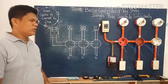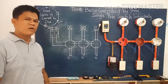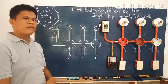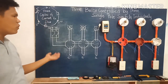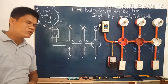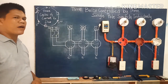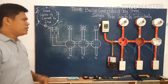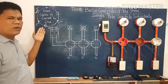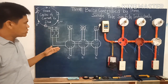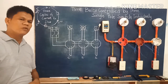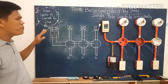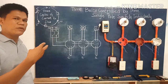Hello guys, welcome back to our channel here at Maestro Electrical. For today's topic we have three bulbs controlled by three single-pole switches individually. Before we proceed on the actual wiring connections, we need to first have a better understanding about the three cycles of current flow in the circuit and the basic diagrams of three bulbs controlled by three single-pole switches individually.